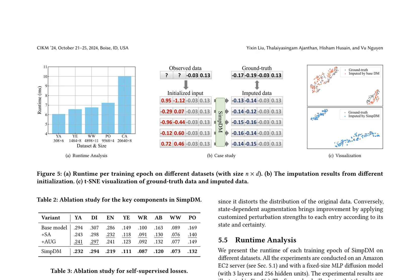The authors evaluate SIMP-DM's performance on 17 real-world datasets across various domains, comparing it with 11 baseline methods, including shallow, deep, and deep-generative methods. Experimental results show that SIMP-DM outperforms all baseline methods in terms of root mean squared error (RMSE), achieving an average rank of 1.4.